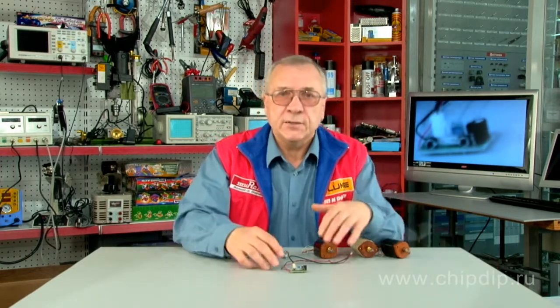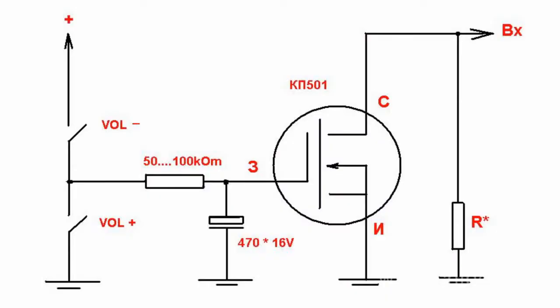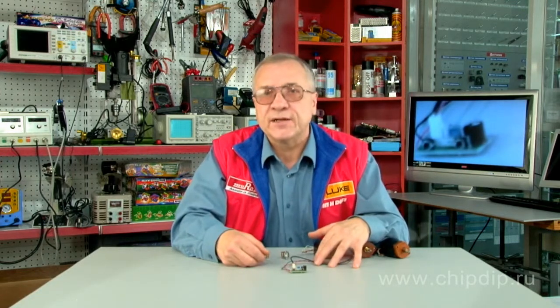One of the variants of an electronic volume regulator uses a field effect transistor as a mini-multiple-step selection switch. The circuit uses a field effect transistor with an insulated gate, model KP501, manufactured in Russia. The silicon N-channel transistor KP501 is designed to be used as a switching element for electric circuits in radioelectric equipment.